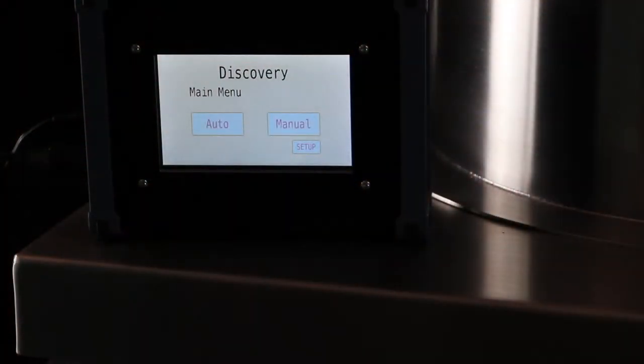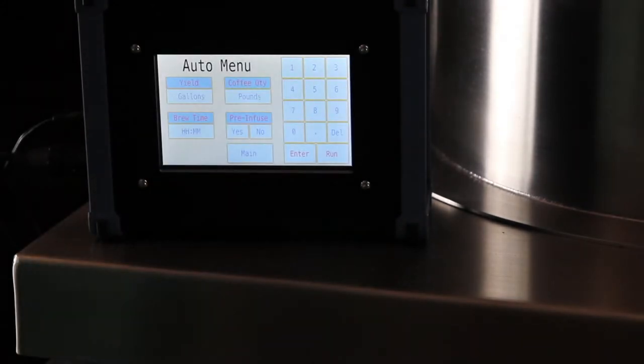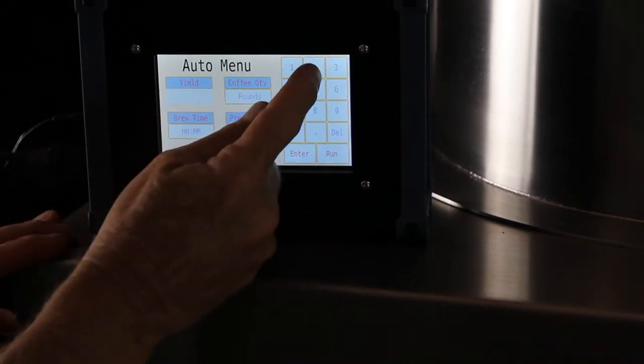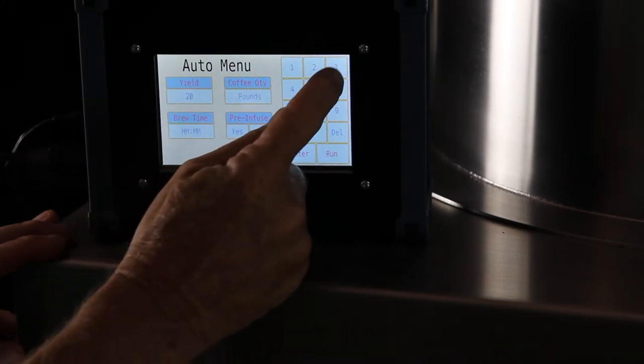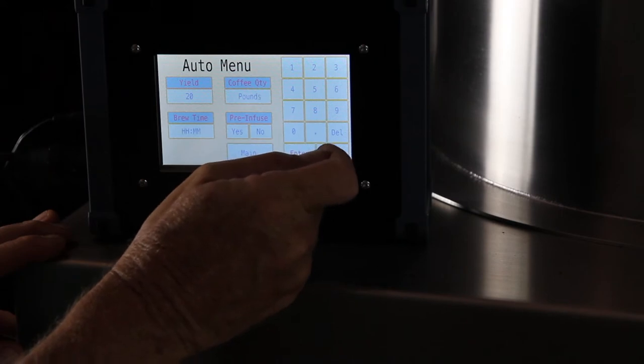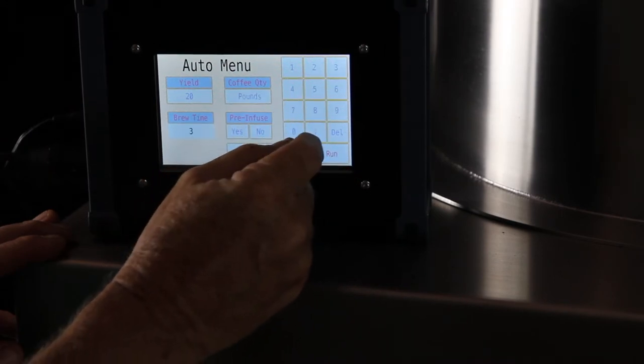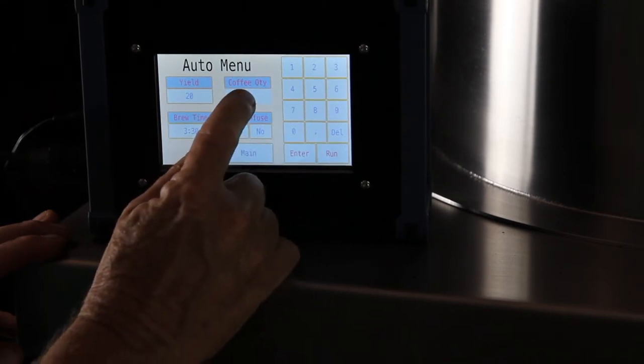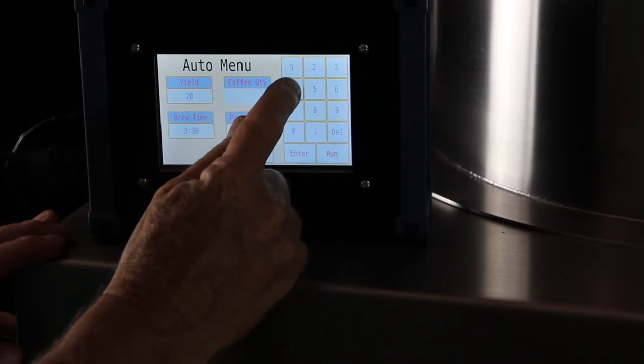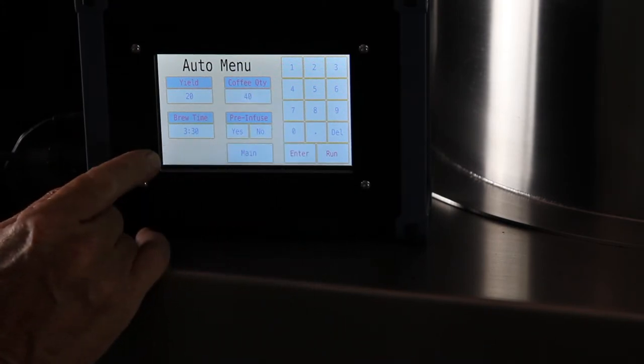Next, we'll set up your brew profile program. Use the auto function on the controller and input four variables including yield, brew time, coffee quantity, and the fact that you've pre-infused. The controller will calculate the desired flow rate and total amount of water to dispense to achieve your desired brew profile.